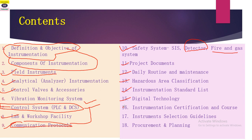The sixteenth point covers instrumentation certifications and courses. If you want to enhance your knowledge, you can join relevant courses and earn certifications. We will discuss all certifications available in the market. The seventeenth point covers instrument selection guidelines — the four to five criteria we follow for selecting different types of instruments.